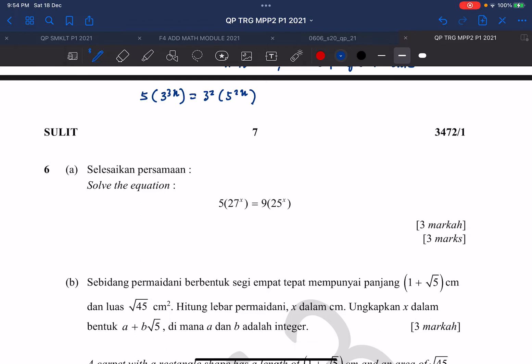So I will move all the values with base 3 to the left-hand side, so I get 3x, 3 cube x, divide by 3 square, I will get minus 2. Then I'll move the 5 to the right-hand side, so 5 square x divide means minus, so minus 1.